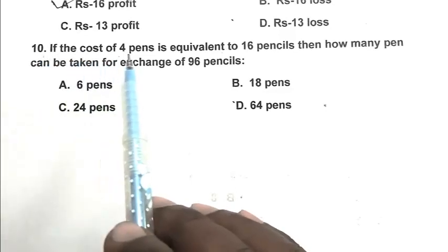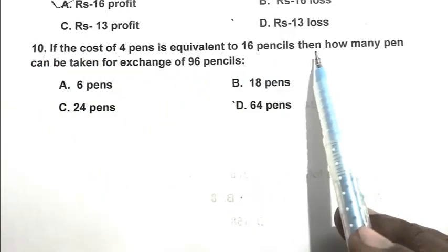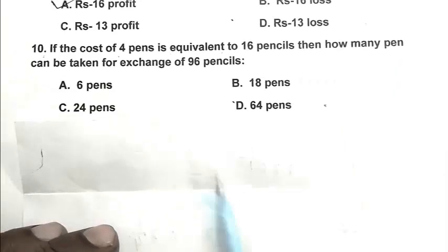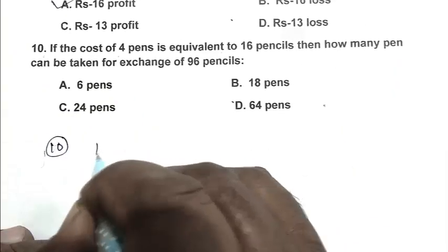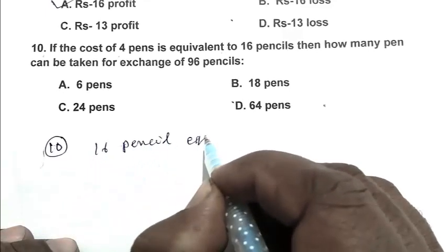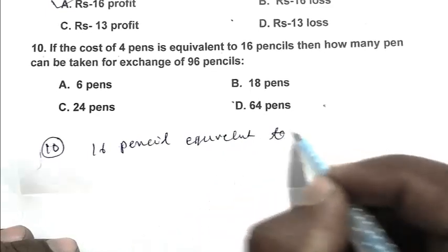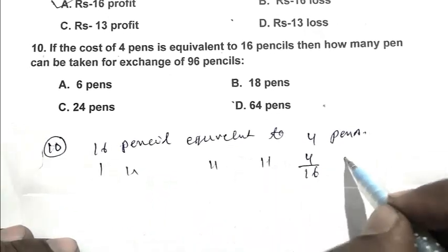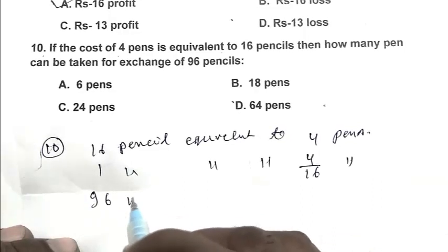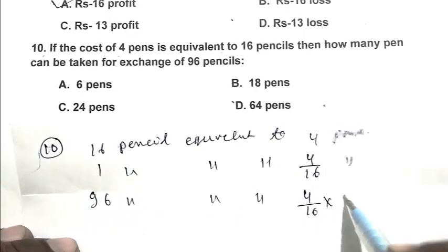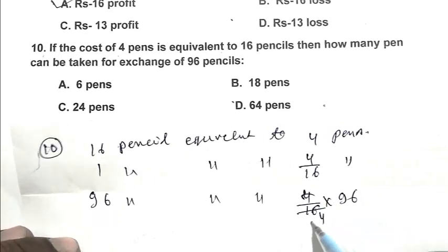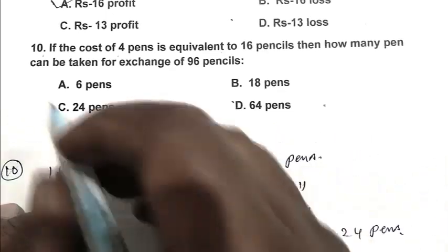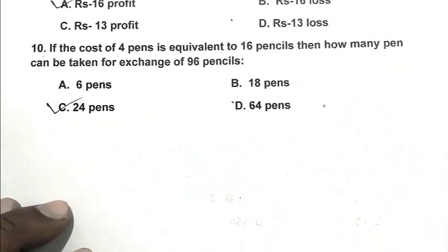Question number ten: if the cost of 4 pens is equivalent to 16 pencils, then how many pens can be taken for exchange of 96 pencils? So 16 pencils equivalent to 4 pens. One pencil equivalent to 4 by 16 pens. 96 pencils equivalent to 4 by 16 into 96, that is 24 pens. So C is the right answer. Thank you for watching, have a good day.